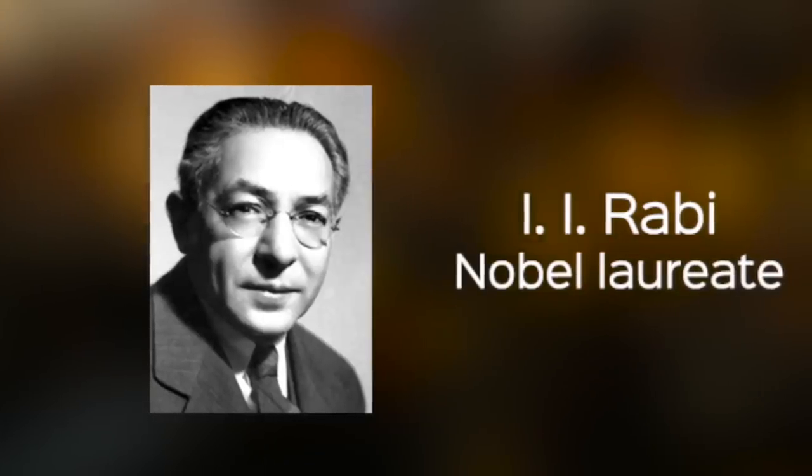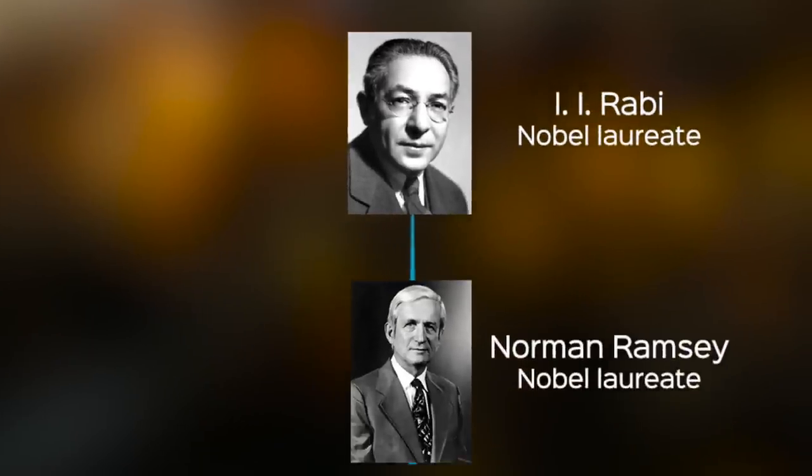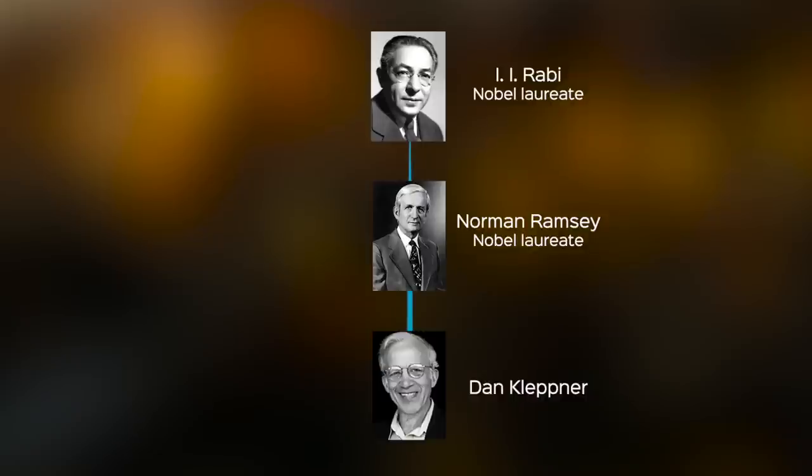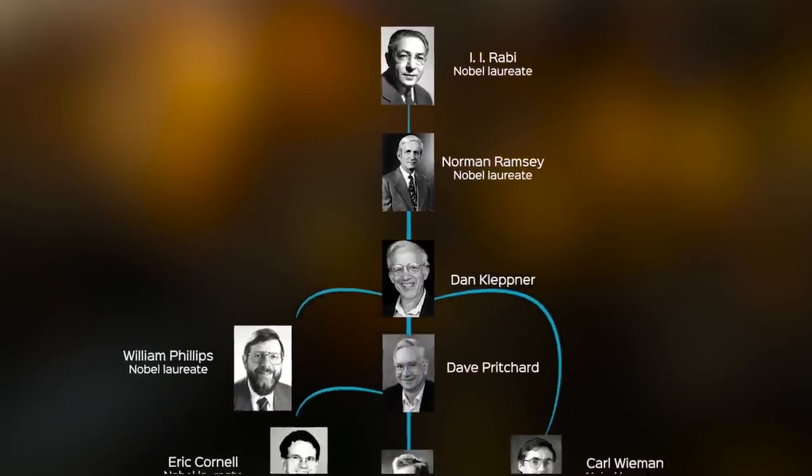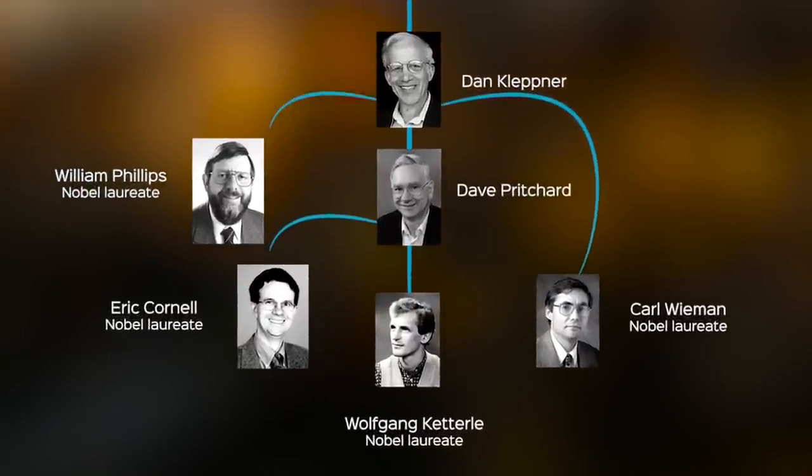This lineage goes actually further back to I.I. Rabi, the person who started modern atomic physics, because Norman Ramsey was a graduate student of I.I. Rabi and Dan Kleppner was the graduate student of Norman Ramsey. So in that sense, my great-great-grandfather, scientifically speaking, is I.I. Rabi, and I think you feel that in this course.